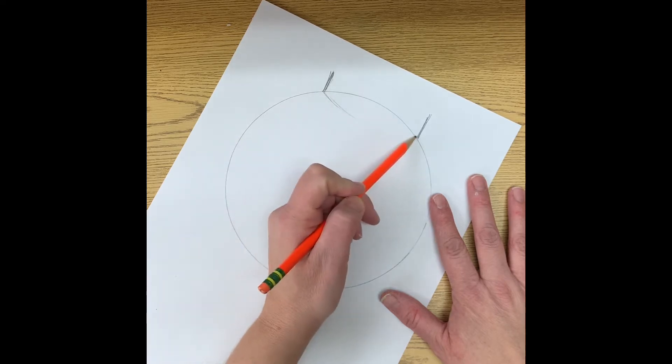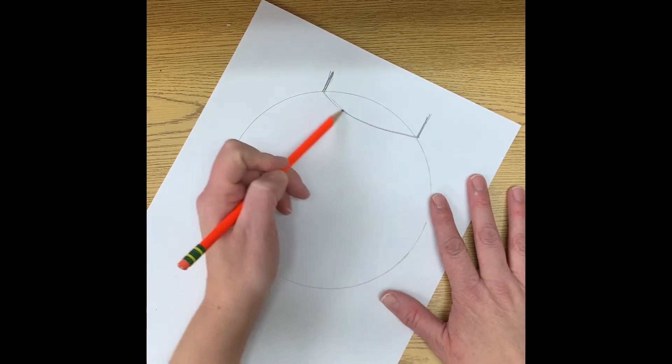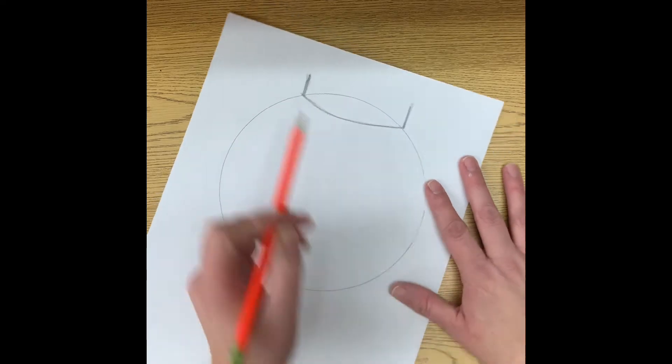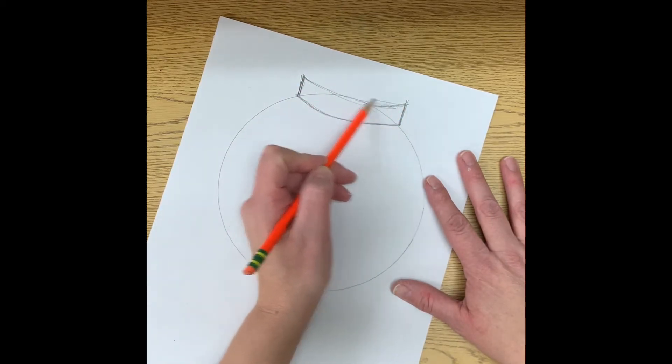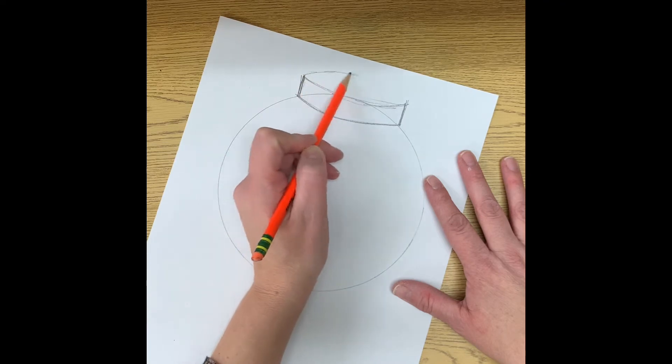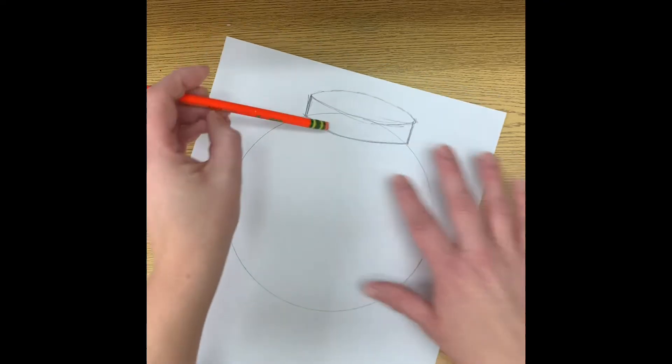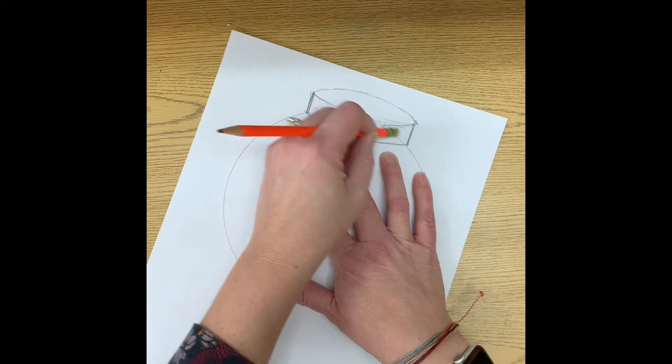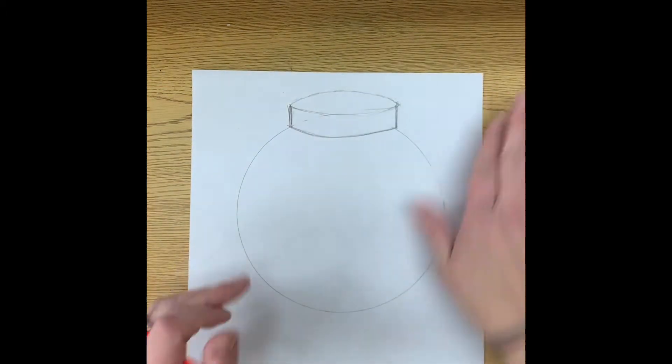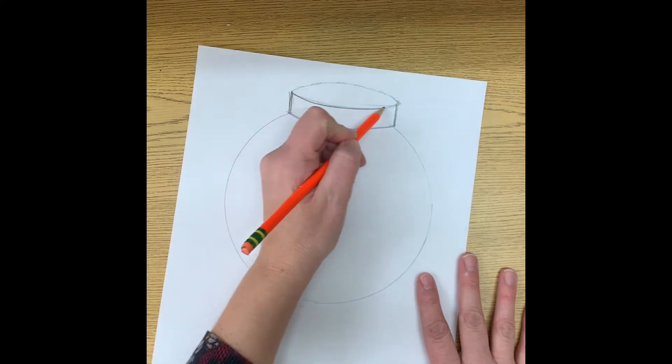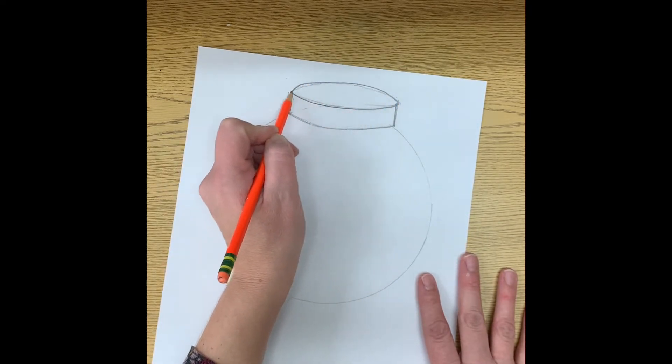We're going to need to make like a smile to create the illusion. And then we'll do another one. And then we'll just add kind of a top. Okay, and then we can even erase away any of this extra. Okay, so now we have the top of our gumball machine.